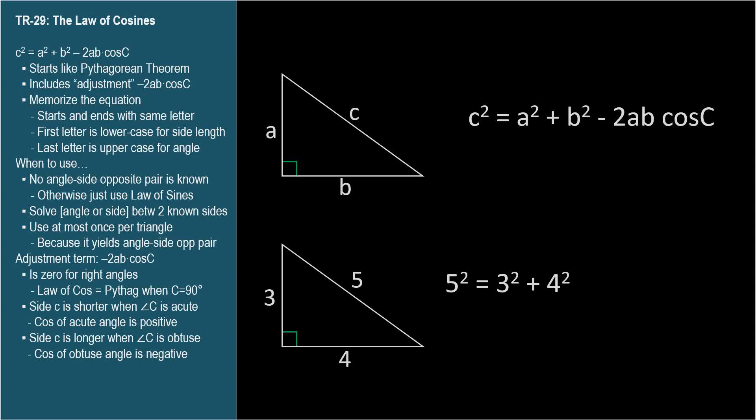Can you plug in the numbers? Minus 2 times 3 times 4 times cosine 90 degrees. The cosine of 90 degrees is zero, so the last expression becomes zero. So for right triangles, the Law of Cosines is equivalent to the Pythagorean Theorem because cosine 90 degrees equals zero.